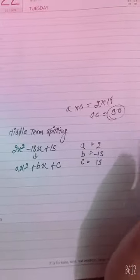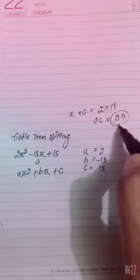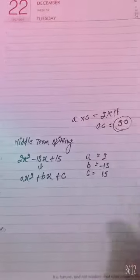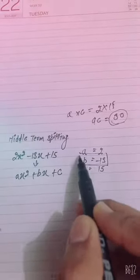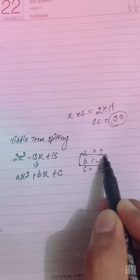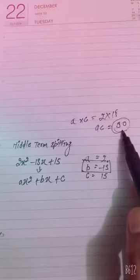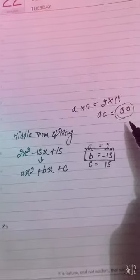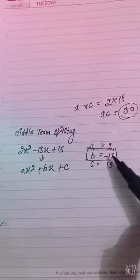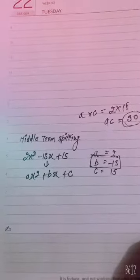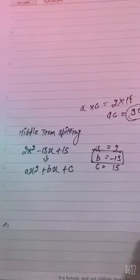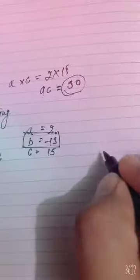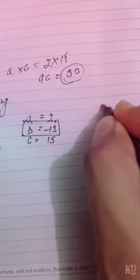Now we have got 30. What we have to do is find any two numbers whose product is 30 and whose sum is minus 13. We have to check which numbers these will be, so let's start from the table of 1.